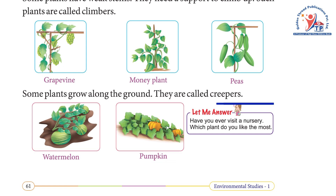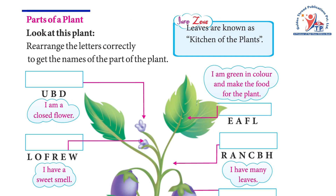Some plants grow along the ground. They are called creepers — watermelon and pumpkin. Have you ever visited a nursery? Which plant do you like the most?